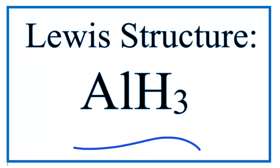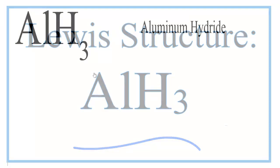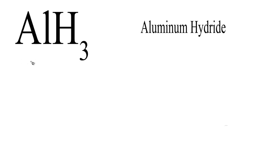For the AlH3 Lewis structure, let's add up our valence electrons first. We can see that aluminum is in group 13, sometimes called 3A. It has three valence electrons.